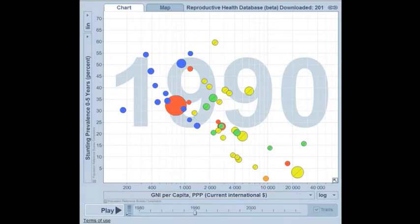Back in 1990, South Asia and many of those sub-Saharan African countries had relatively high stunting and low gross national income per capita. This big red bubble here is China, with about a third of children stunted in 1990 and a GNI per capita of $780.